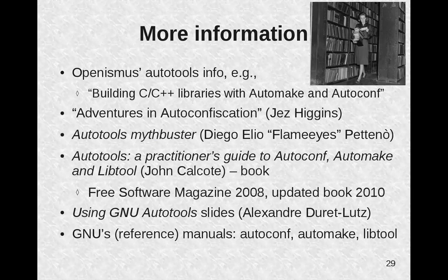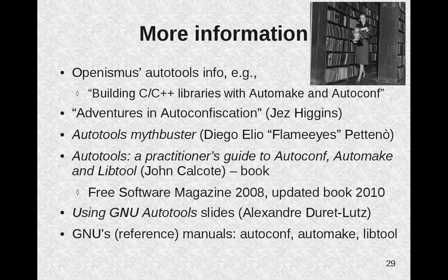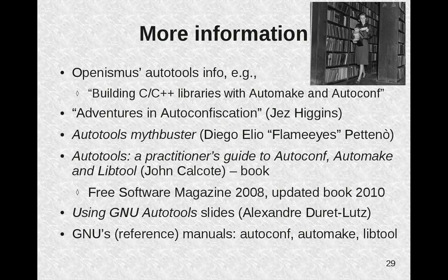Here are some places for useful information. Openismus' Autotools info has some short how-tos for common cases. Jess Higgins' 'Adventures in Auto-confiscation' has a little story that's interesting to read. The Autotools Mythbusters talk about specific issues and how to deal with them. John Calcote's book, 'Autotools', is a much more modern book — if you need a book, that's probably the one you want. The 'Using GNU Autotools' slides are helpful. And of course the GNU reference manuals on Autoconf, Automake, and LibTool — those are reference material that's easier to understand once you've read some of the other material.